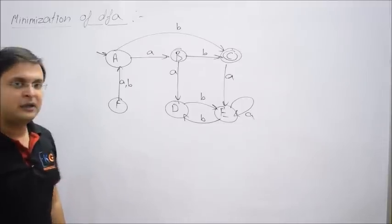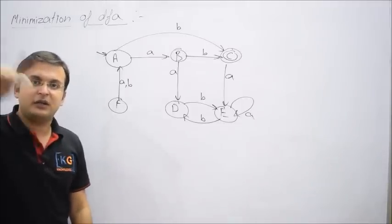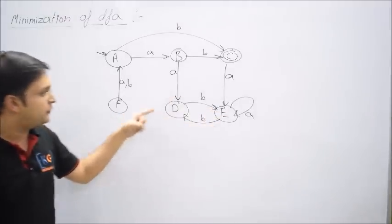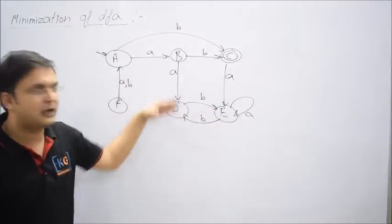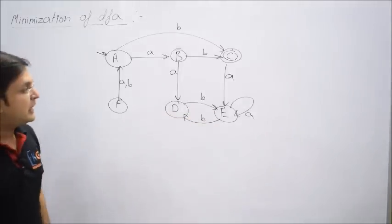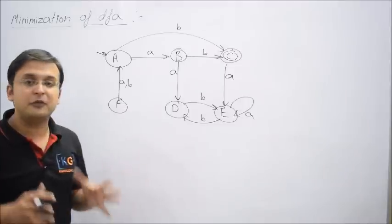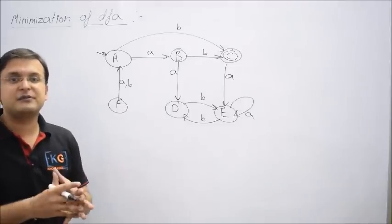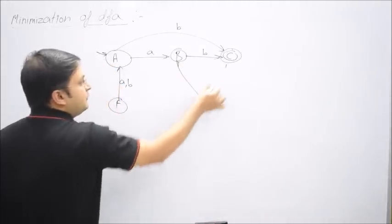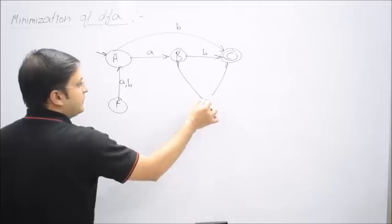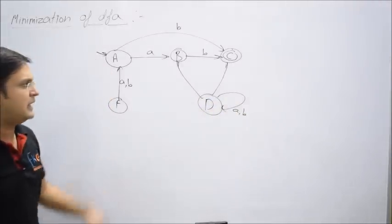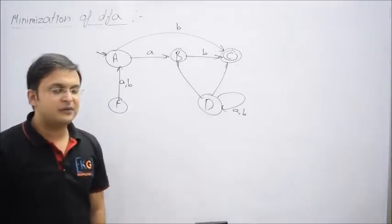Please understand this point: a state is not dead just because it has a loop. D is going to E and E is going to D, but actually both are going nowhere — they're just looping around. So both D and E are dead states. And as I told, if we have more than one dead state, we can merge them together. So let me remove both and call only D with a self-loop. You can name it anything. That is step number one.